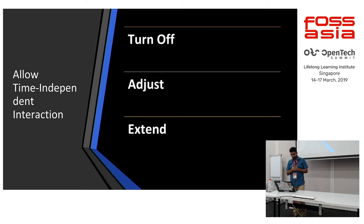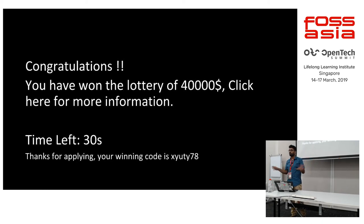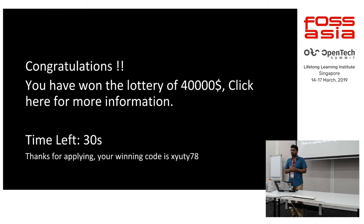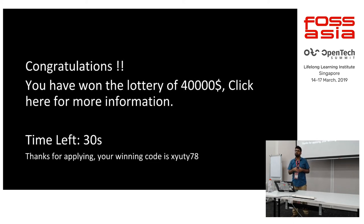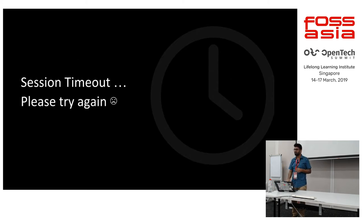Allow time-independent interactions. The Operable guideline suggests providing turn off, adjust, and extend types of interactions. Imagine you got a message: 'Congratulations, you won the lottery — click here,' and there's a timer counting down 10, 9, 8, 7. You weren't able to click in time and lost all the dollars. Timing for you can be different from timing for another person — if you take 10 seconds to click, maybe someone else needs 12. You always need to allow something like 'press spacebar to extend the time.' You should not force users to complete tasks within a strict time frame, and you don't want to show a session timeout message.